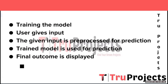The next step is using the trained model for prediction. The preprocessed input is fed into the trained Unigram, Bigram, and Ngram models for each sentiment category to predict the sentiment intensity of each aspect mentioned in the user's tourist review.